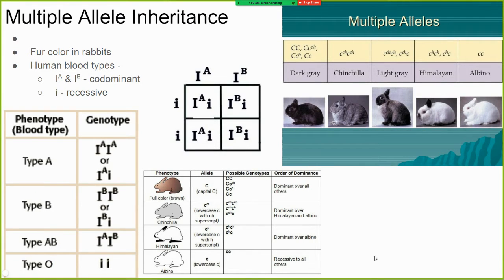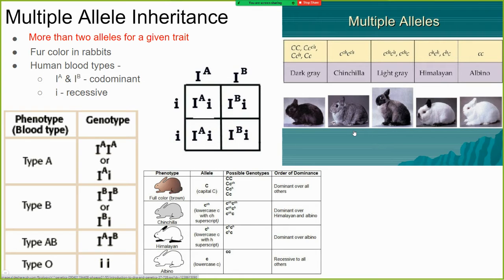The genetics we've been doing is pretty simple — just Punnett squares with a single trait controlled by one gene, either dominant or recessive. But most characteristics are more complicated than that. In a lot of cases there are actually many genes for a certain trait. For example, the fur color of rabbits isn't controlled by just one single gene.